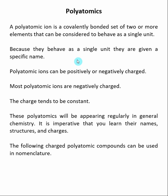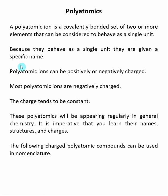A polyatomic ion is a covalently bonded set of two or more elements that can be considered to behave as a single unit. By a single unit, we mean that during most reactions, the polyatomic will not be broken up. So if you put a polyatomic into a reaction, it will come out as a product unchanged. Because they behave as a single unit, it is convenient for us to give each polyatomic a specific name.